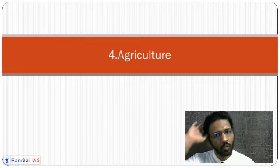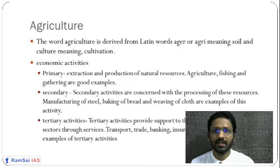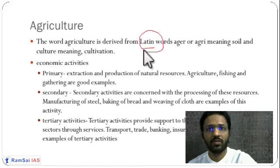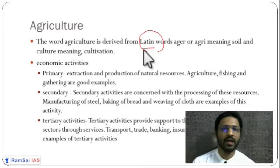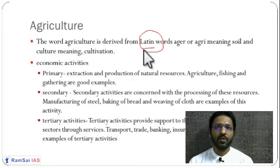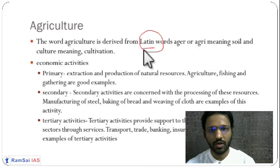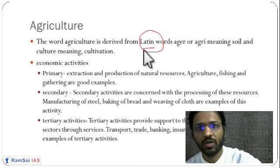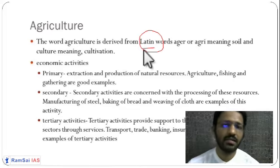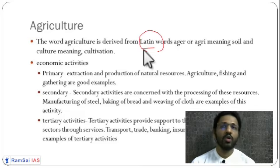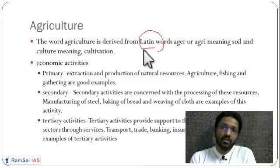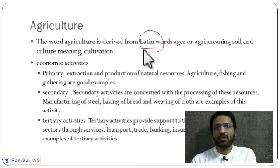When we talk about agriculture, what do we mean by it? The word agriculture is derived from the Latin word 'ager' or 'agri', which means soil. 'Agri' means soil and 'culture' means cultivation. So by using soil we are doing cultivation of various crops — that is why it is called agriculture.